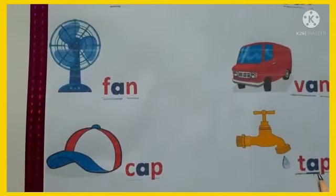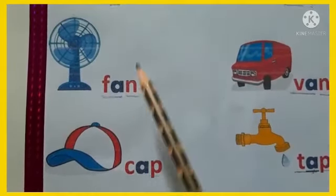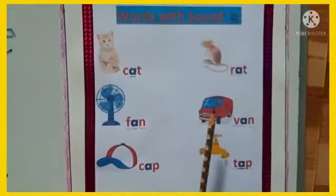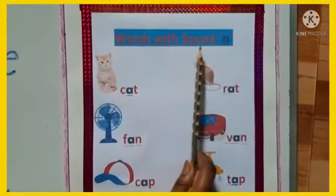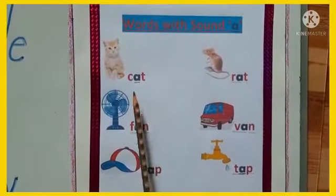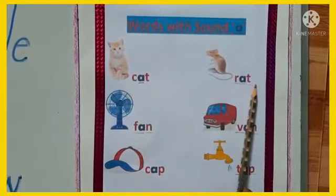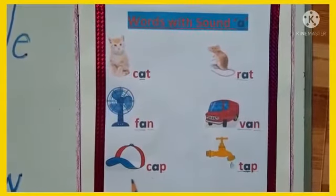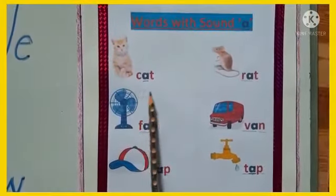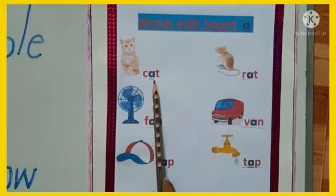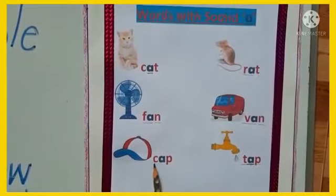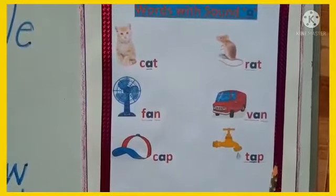We got the sound A for all these words. All these words have the sound A in the middle. Words with sound A: Cat, Rat, Fan, Van, Cap, Tap. We also got the same ending sound. Cat and Rat end with the -at sound. Fan and Van end with the -an sound. Cap and Tap end with the -ap sound.